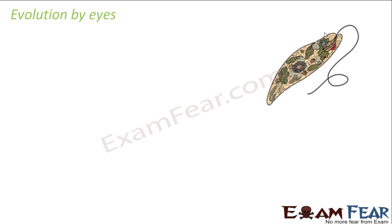Long back, in very primitive organisms, there was no distinct structure called an eye for vision like how we have it now. But in due course of time, in one of those primitive organisms like euglena, it was seen that they had some eye spot kind of structure which was capable of detecting light. Here you can see a red colored structure — that was nothing but the eye spot.